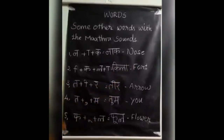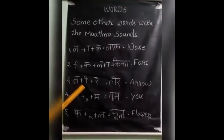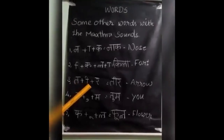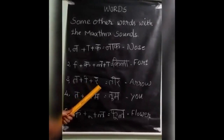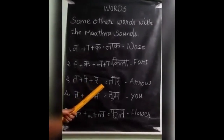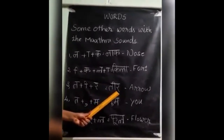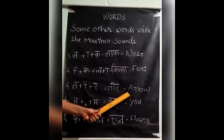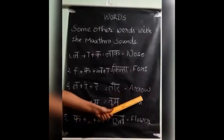Ok children, are you clear? The next one. Ta plus eeke symbol plus ra equal to teer. How to pronounce this? Teer. Teer means arrow.